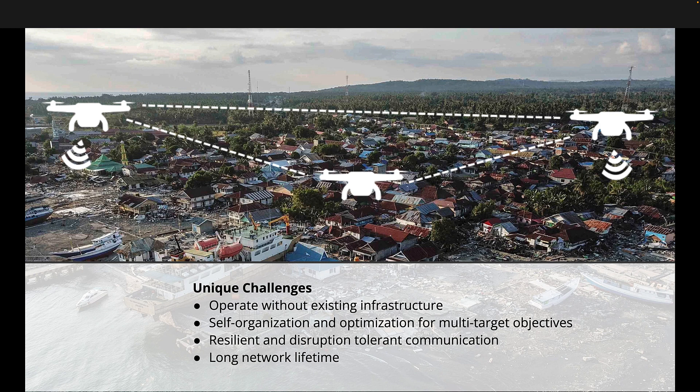Since we will probably deploy more than one UAV, they need to self-organize and we need advanced mission planning so we can optimize for multiple target objectives such as surveying an area, providing communication, and getting sensor readings from various locations. The remote operation link, as well as communication to other nodes in the network, must be resilient and disruption-tolerant. We also want a long network lifetime, as UAV airtime is quite limited, requiring battery replacement and redeployment.